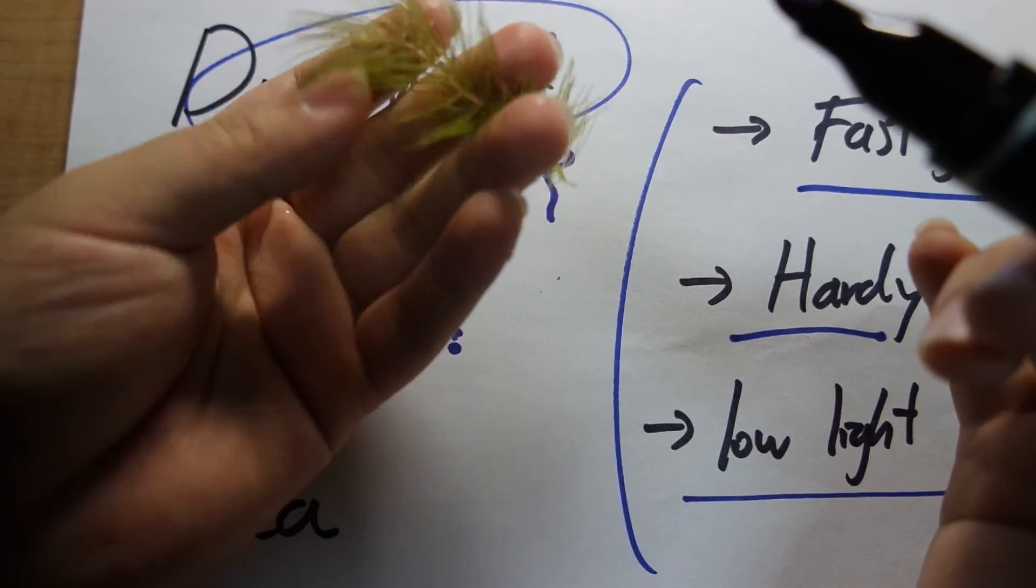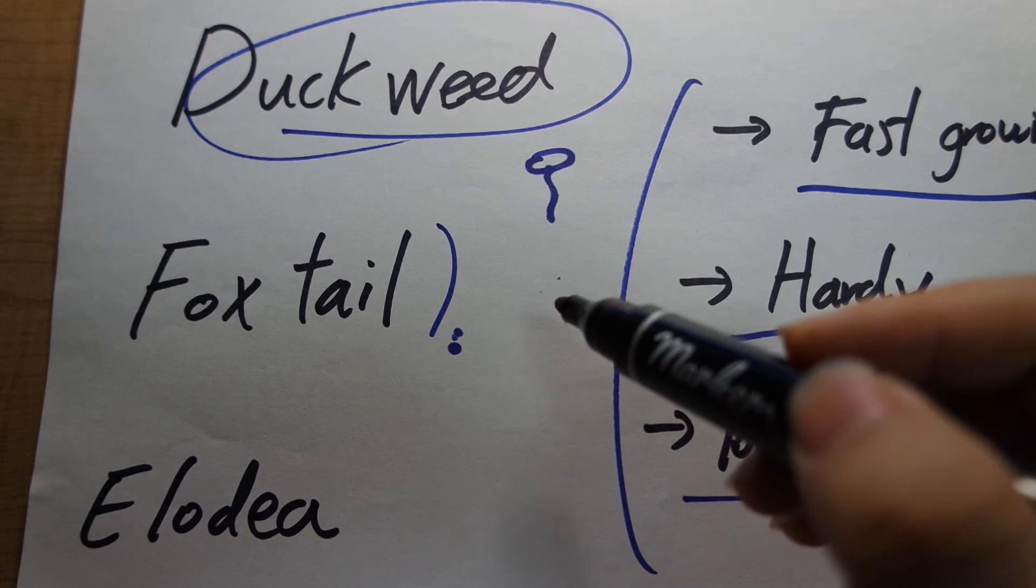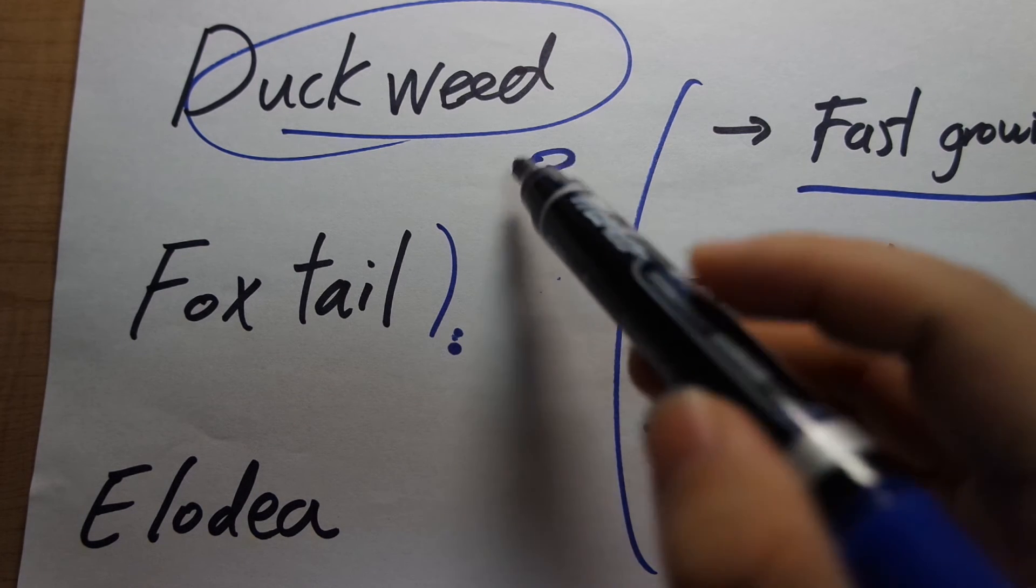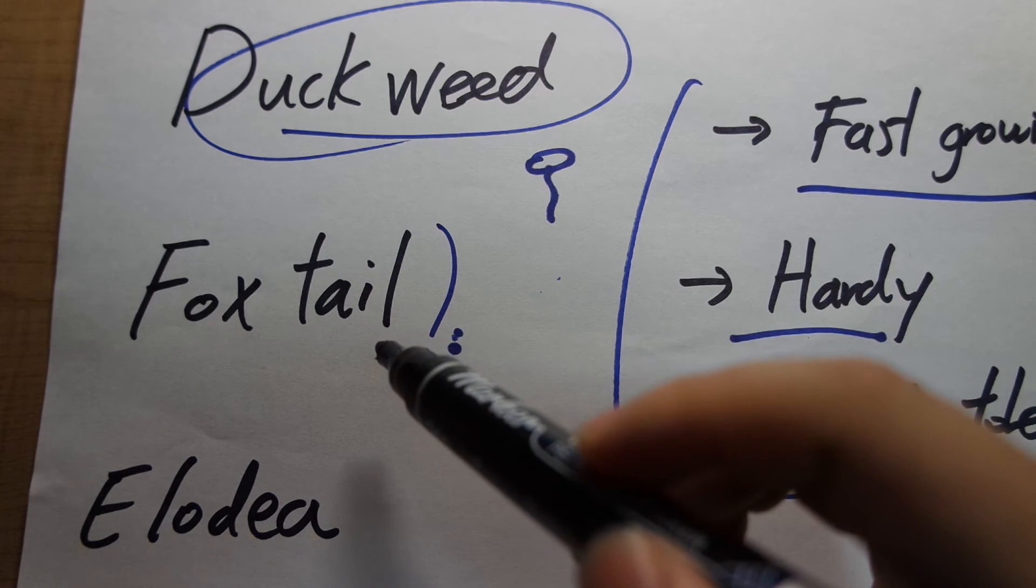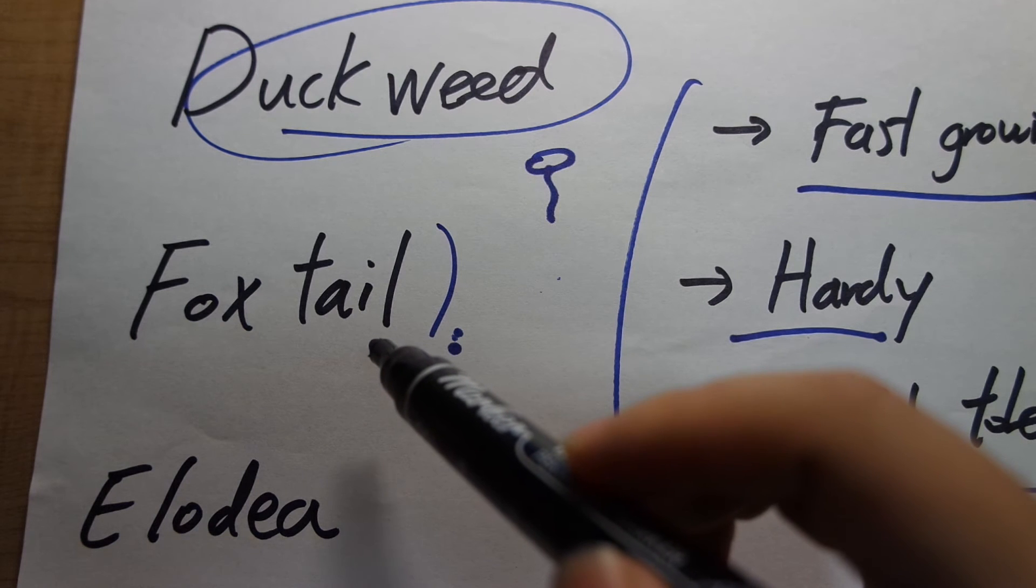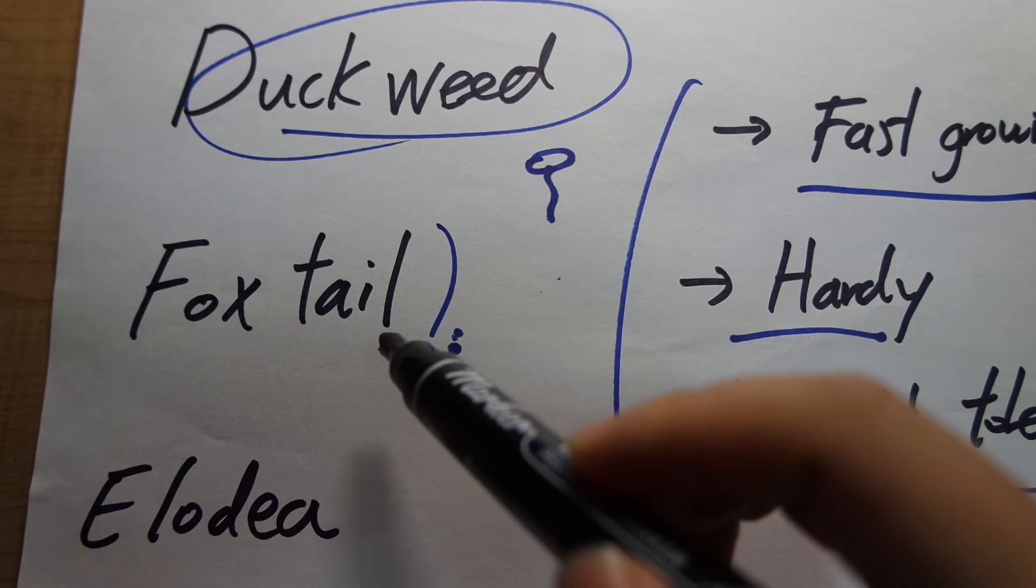And again, these plants are actually incapable of growing roots. They're very simple. And their simple structure makes them grow very fast. I don't think they grow as fast as duckweed, but they're pretty close. And these guys grow free-floating. You can plant them in a substrate, but they will not grow roots under any circumstances. They just do not have the capacity to do so.